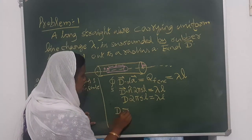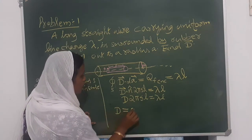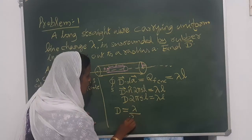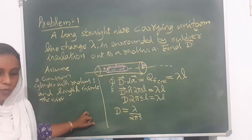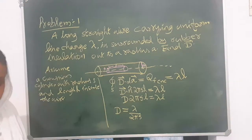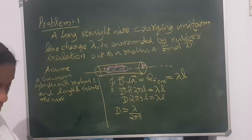And D is equal to lambda by 2 pi S. D is equal to lambda by 2 pi S.